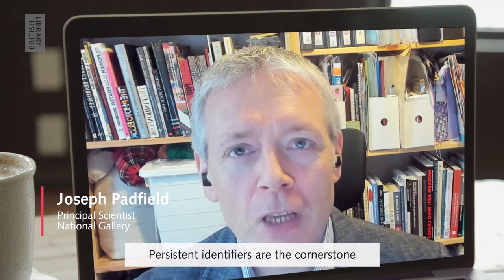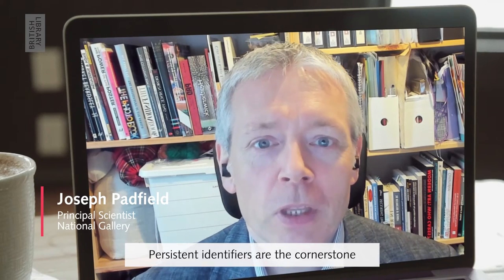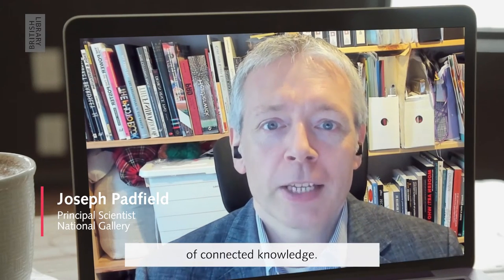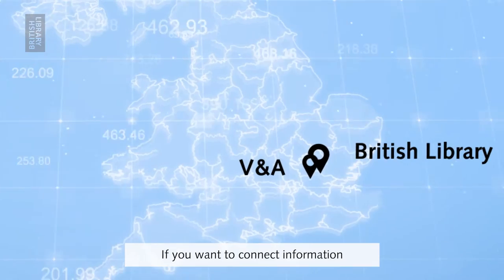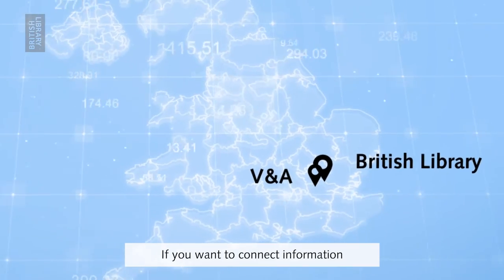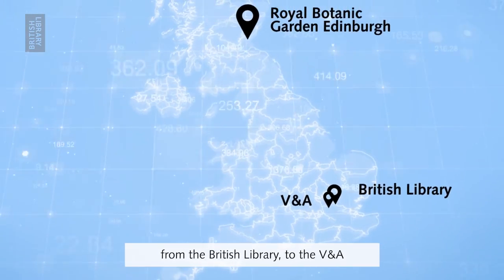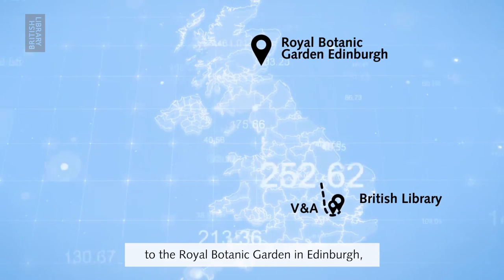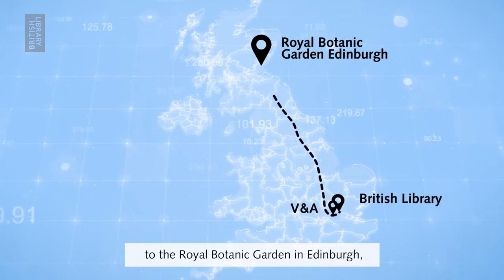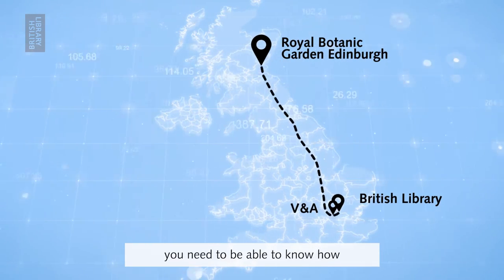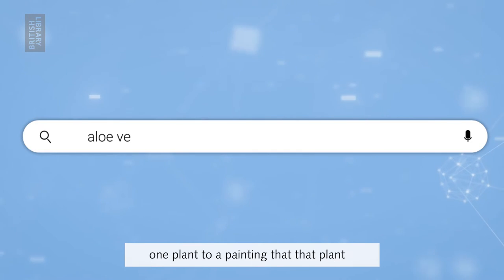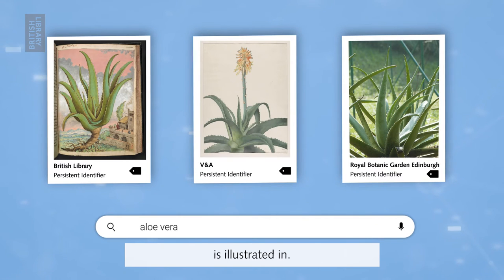Persistent identifiers are the cornerstone of connected knowledge. If you want to connect information from the British Library to the V&A to the Royal Botanical Gardens in Edinburgh, you need to be able to know how you connect one institution, one object, one plant to a painting that that plant is illustrated in.